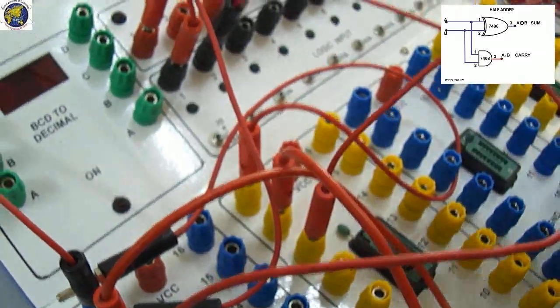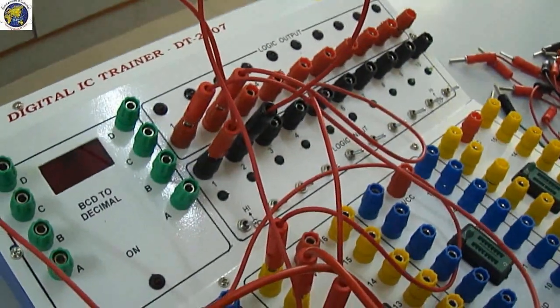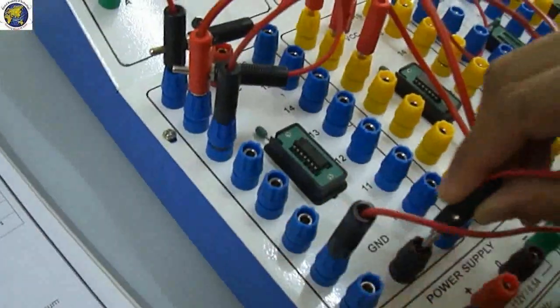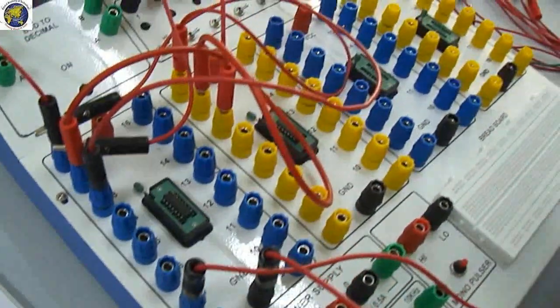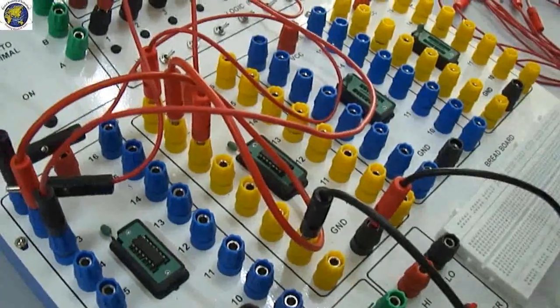Next, connect pin number 7 to ground for both ICs, 7486 and 7408. Then pin number 14 of both ICs is connected to VCC.